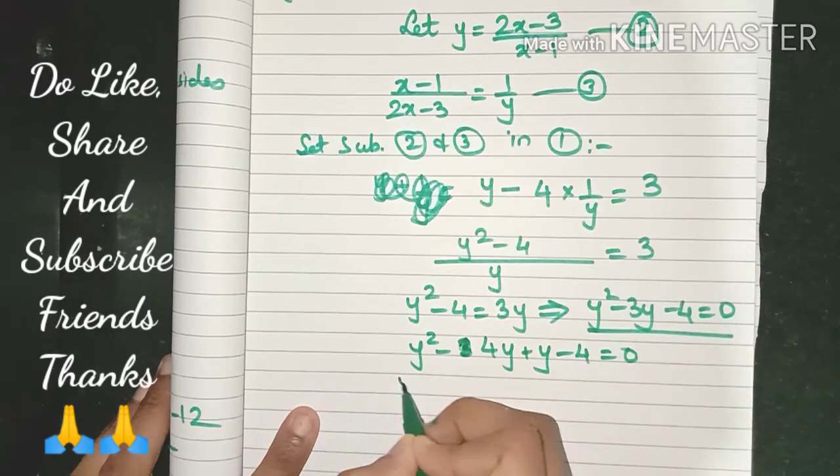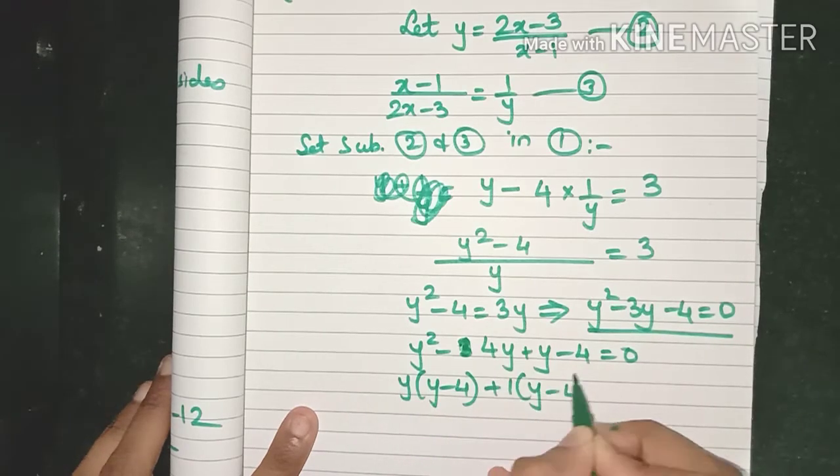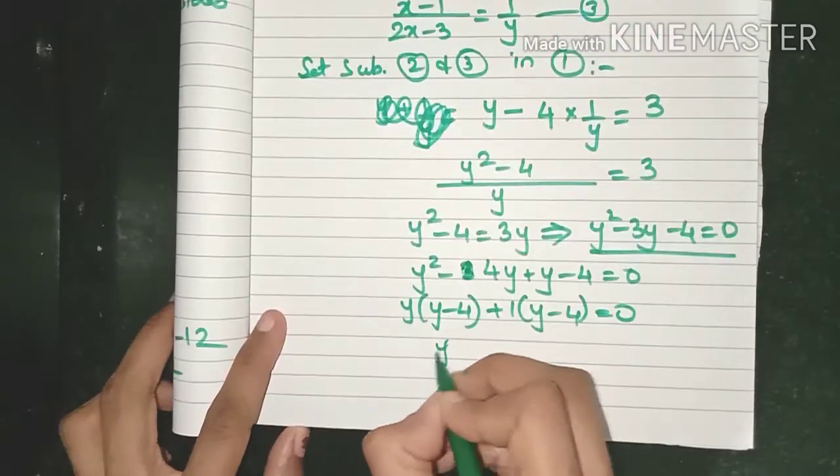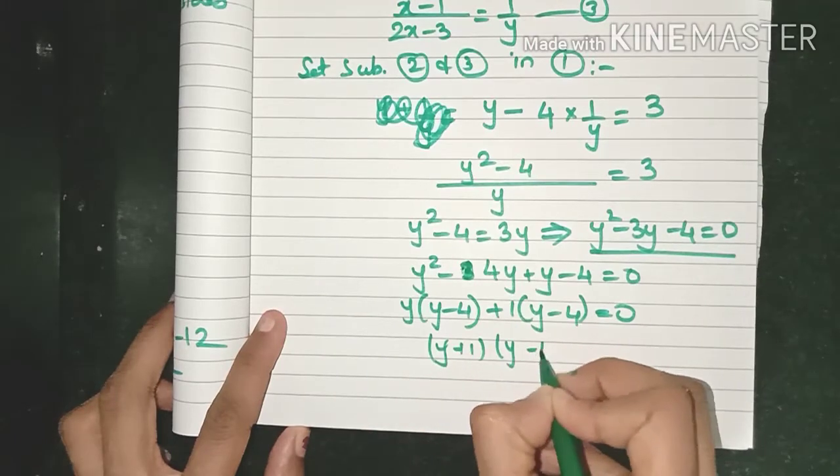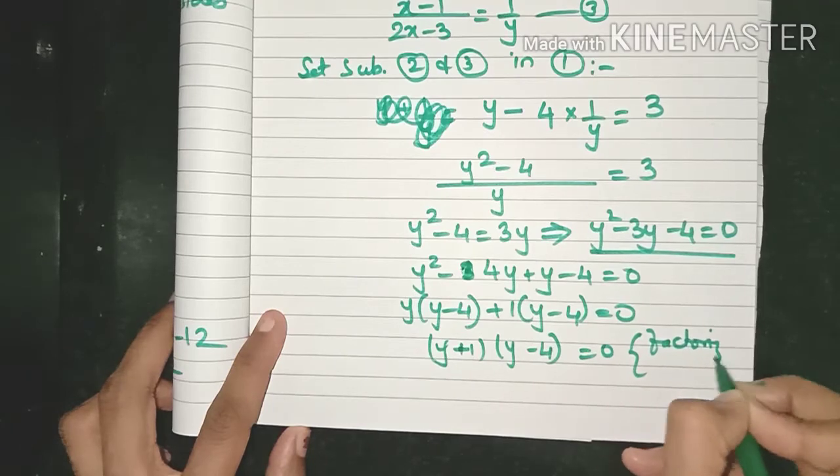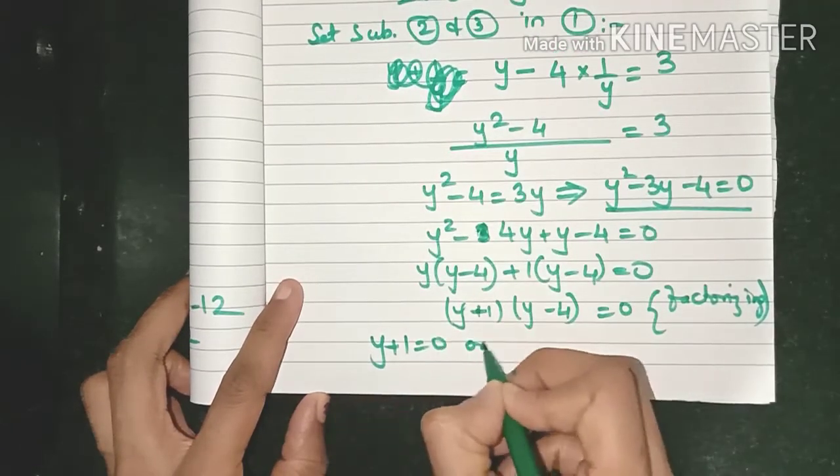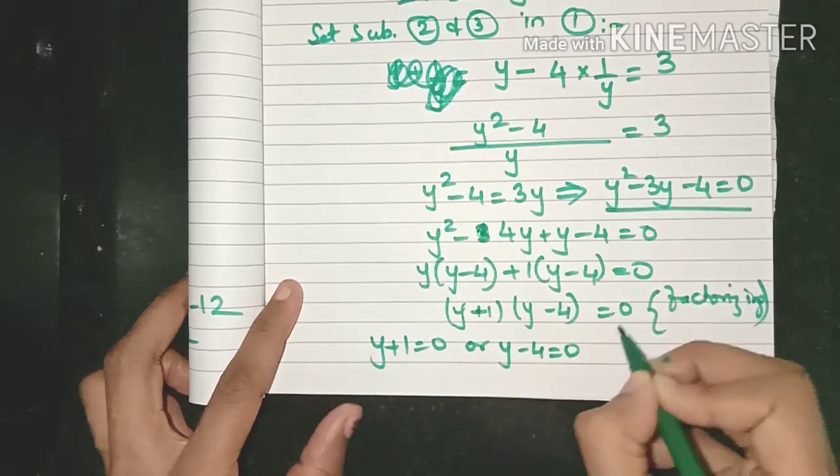Let's do the factorization quickly. So I think we will get (y + 1) and (y - 4) by factorizing, and because of the zero product rule we will get this.